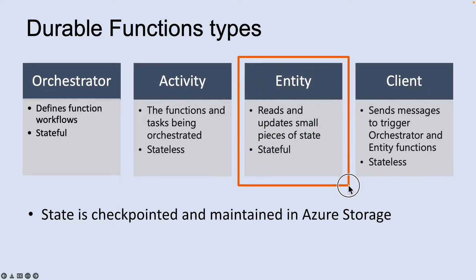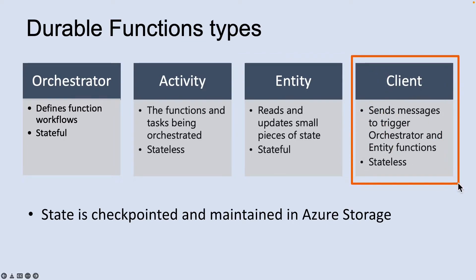The third type is called Entity. Entity functions are functions with a special trigger type known as Entity Trigger, which can be invoked from Client functions or from Orchestrator functions, and Entity manages state explicitly. The last type is called Client. Client sends messages to the Task Hub used to trigger Orchestration and Entity Trigger bindings, and what makes a function a Client function is its use of the Durable Client output binding.